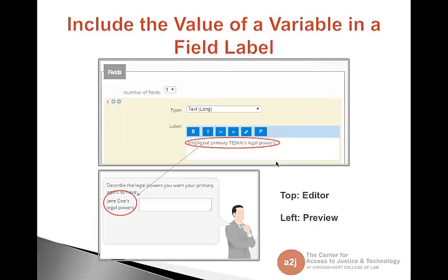Another great way to use the variable macro is to include the value of a variable in a field label. Here in the editor, you can see we're using that format, and it outputs to the value of that variable in the field label of the question which you're asking.